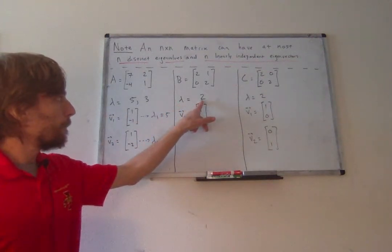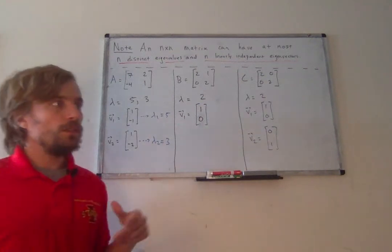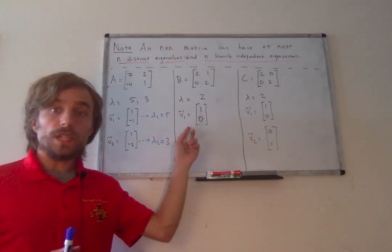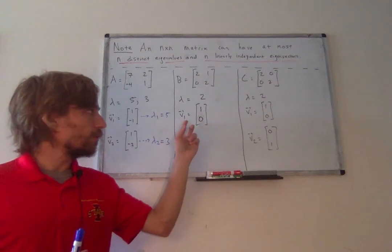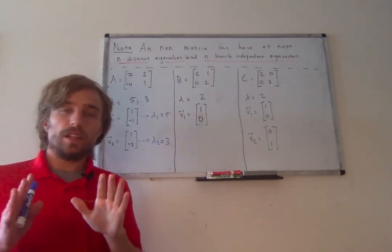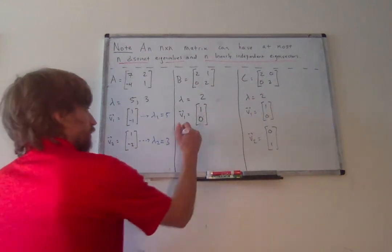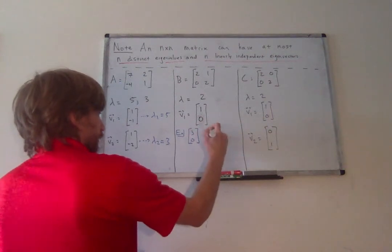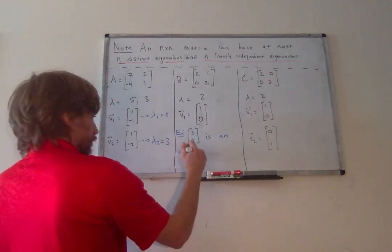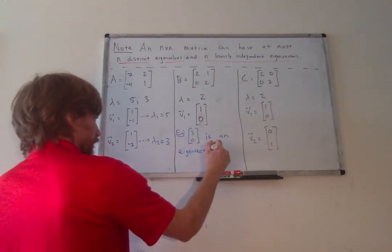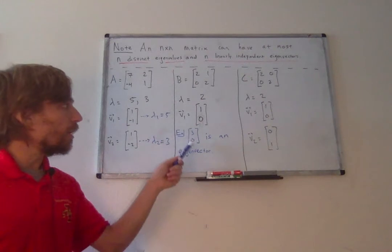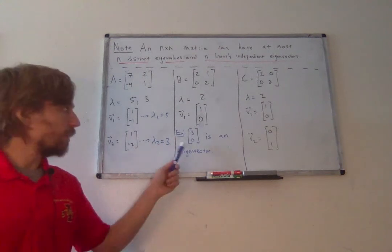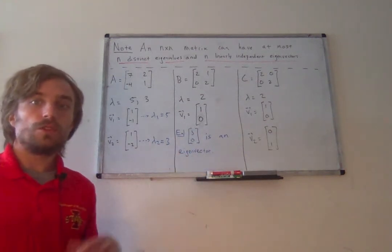So lambda equals 2. Using the standard process of calculating eigenvectors, this eigenvalue actually only has one linearly independent eigenvector, V1. That is not to say that 1, 0 is the only eigenvector — for example, 3, 0 is also an eigenvector. What this is saying is that every other eigenvector corresponding to eigenvalue 2 is a scalar multiple of (1, 0). So notice those two vectors are not linearly independent, even though they're both eigenvectors.